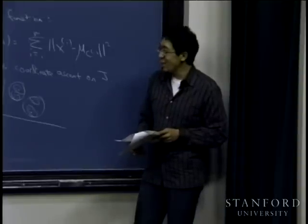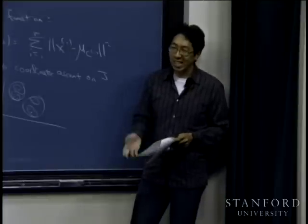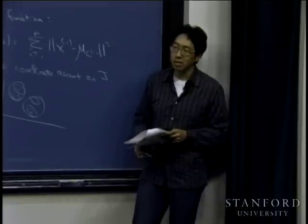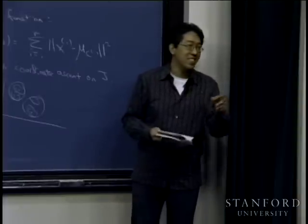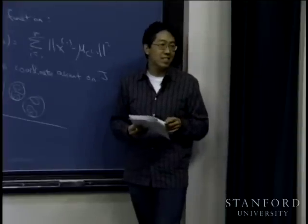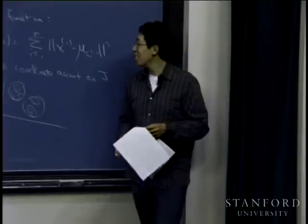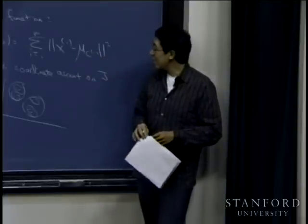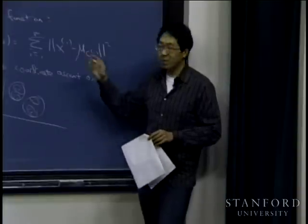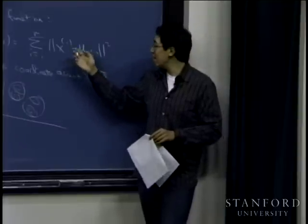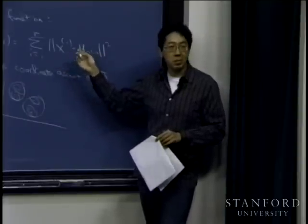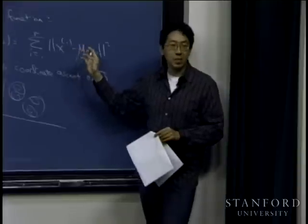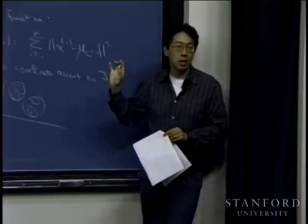If one cluster centroid ends up with no points assigned to it, you can either eliminate it or reinitialize it randomly if you really want k clusters. Regarding the choice of norm: for the vast majority of k-means applications with data in R^n, you use the two-norm. Other norms like the one-norm or infinity-norm are possible but less common. What I've described is probably the most commonly used variant.